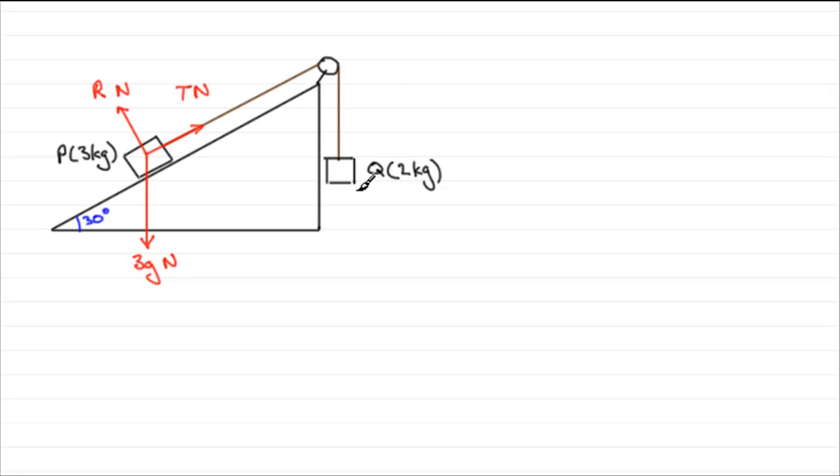Let's move over to Q now. Now Q is going to want to go down. We've got its weight acting downwards. The weight will be mg. Mass is 2 so it's going to be 2g newtons. There'll be a tension acting upwards.